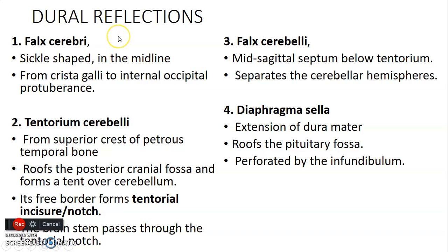The first dural reflection is the falx cerebri. It is sickle-shaped, found in the midline between the right and left cerebral hemispheres. It extends from the crista galli — part of the ethmoid bone in the anterior cranial fossa — to the internal occipital protuberance in the posterior cranial fossa. The second is the tentorium cerebelli, which extends from the superior crest of the petrous temporal bone.